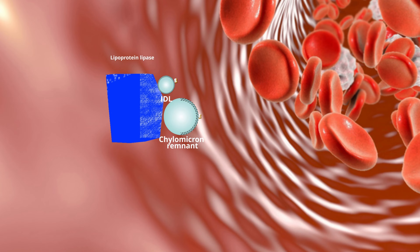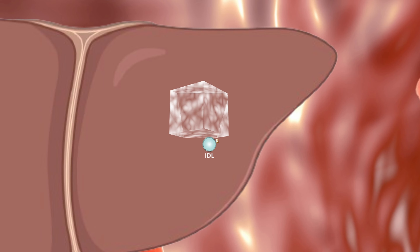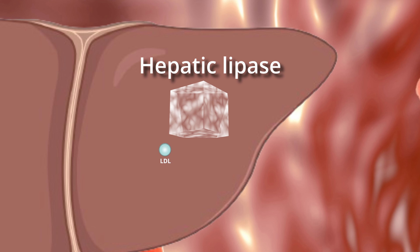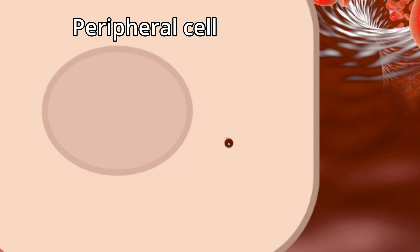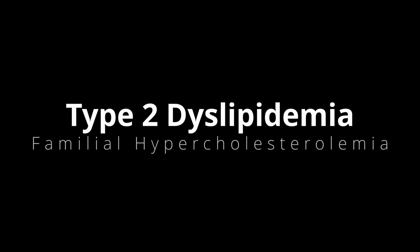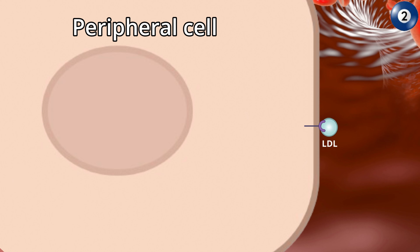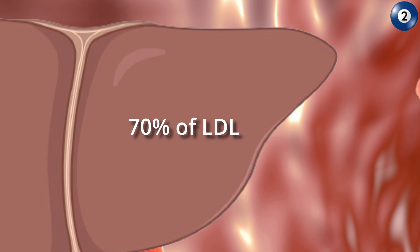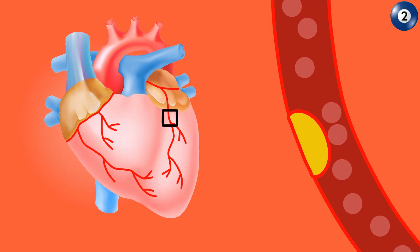Back to the lipid metabolism: chylomicron remnants are taken up by the liver. VLDL, which is converted to IDL, is further hydrolyzed by hepatic lipase to lose ApoE, forming LDL with lower triglyceride and higher cholesterol content. LDL supplies cholesterol to extrahepatic tissues, and remaining LDL is endocytosed by the liver. The LDL receptor mediates the endocytosis of cholesterol-rich LDL, primarily active in the liver, which removes approximately 70% of LDL from the circulation. LDL is directly involved in the development of atherosclerosis, the process responsible for the majority of cardiovascular diseases.